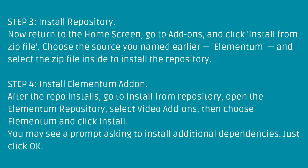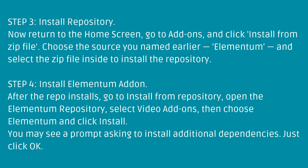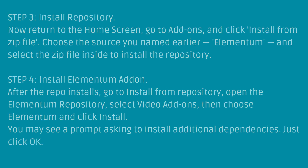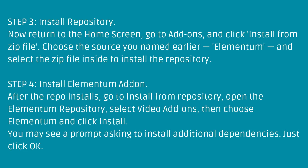Step 3: Install repository. Now return to the home screen. Go to Add-ons and click Install from zip file. Choose the source you named earlier, Elementum, and select the zip file inside to install the repository.